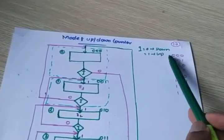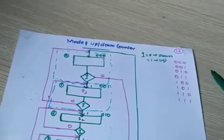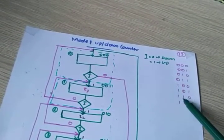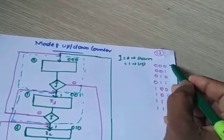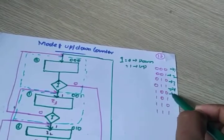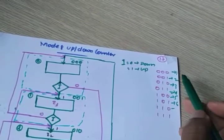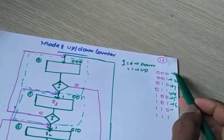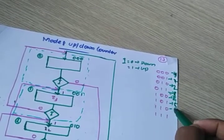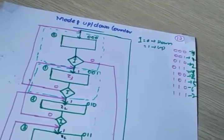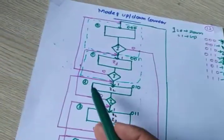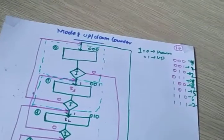Mod-8 means 8 states: 000, 001, 010, 011, 100, 101, 110, 111. So this is state 0, 1, 2, 3, 4, 5, 6, 7th state. That's why we return like this — 0th state, 1st state, 2nd state, 3rd state, like that.